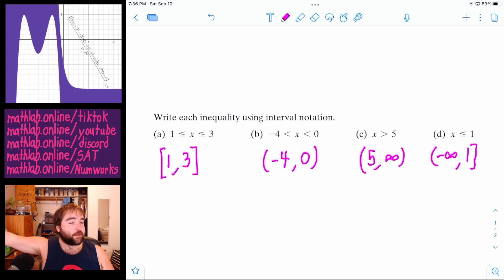We're just saying it can be anything all the way down to a negative infinity, but it never will reach negative infinity, and all the way up to one. And it can be one.